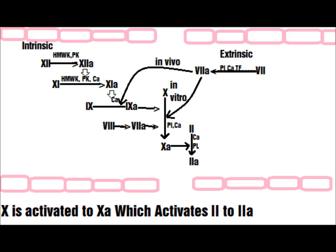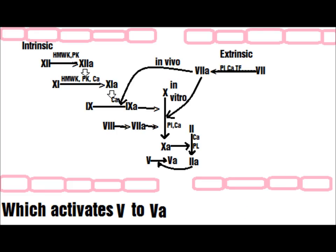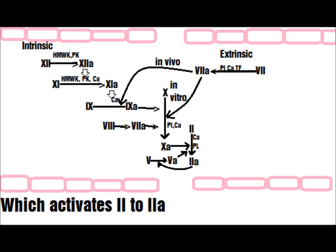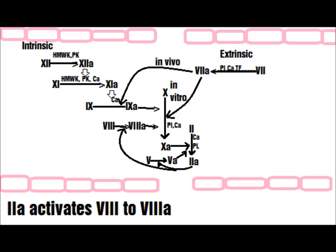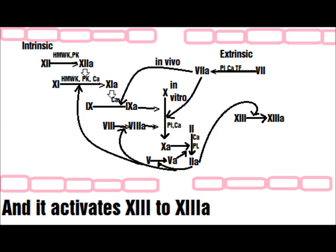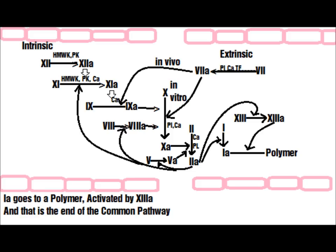The Common Pathway: 10A activates Factor 2 to 2A (thrombin), which activates Factor 5 to 5A, which further activates Factor 2 to 2A. Thrombin activates Factor 8 to 8A and activates Factor 11 to 11A. It also activates Factor 13 to 13A and activates Factor 1 to 1A (fibrin). Fibrin 1A forms a polymer, activated by 13A — and that is the very end of the common pathway.